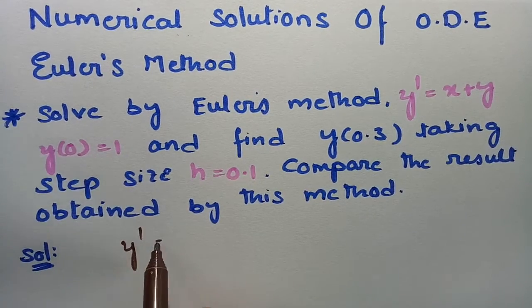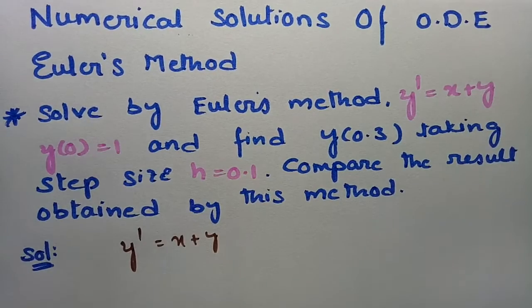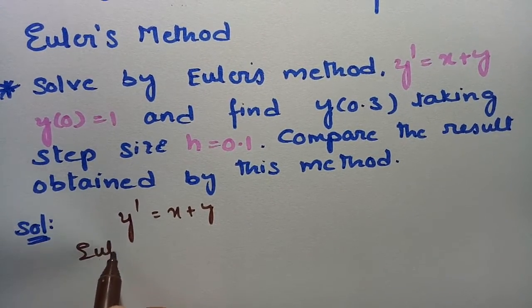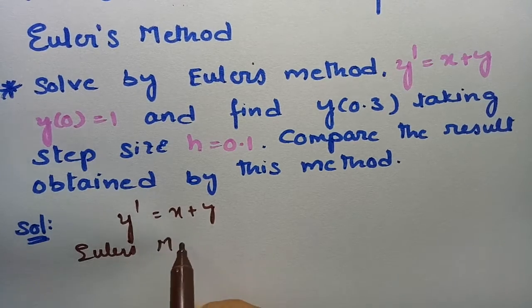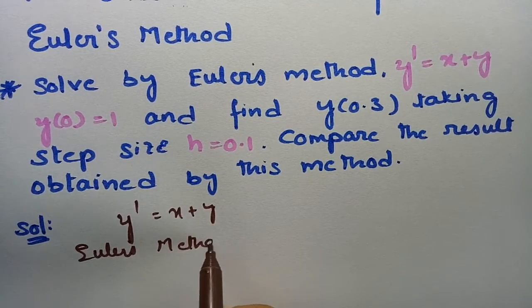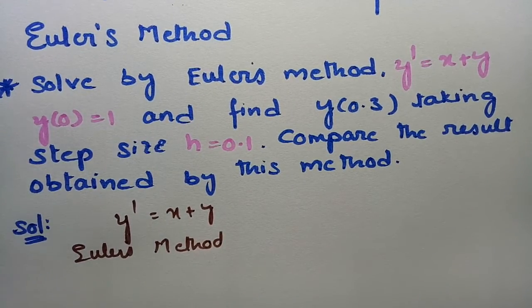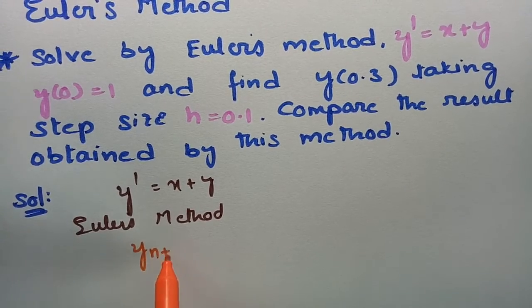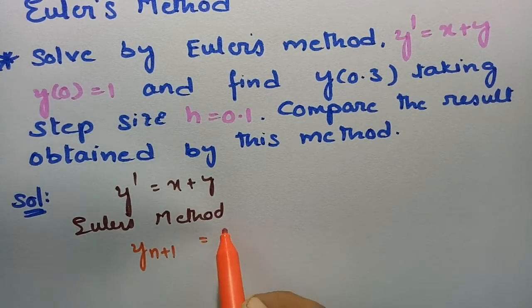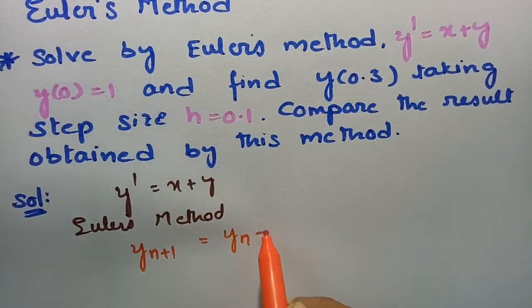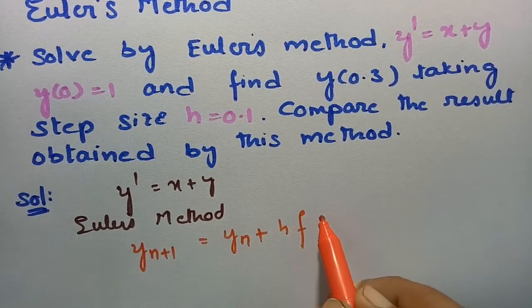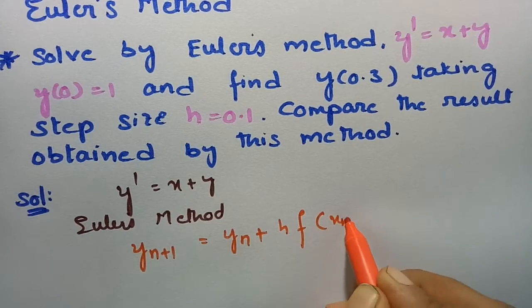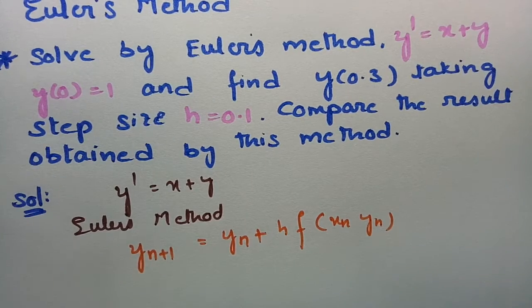It is given that y' = x + y. According to Euler's method, we have the formula: y(n+1) = y_n + h · f(x_n, y_n).